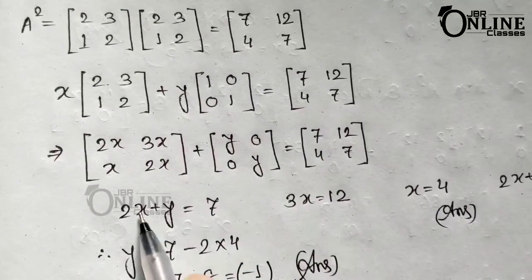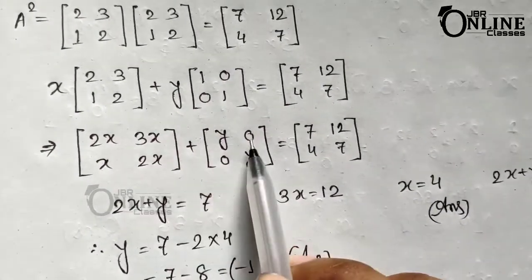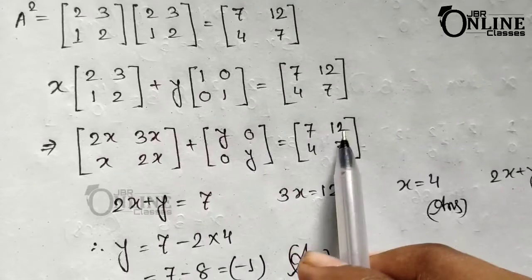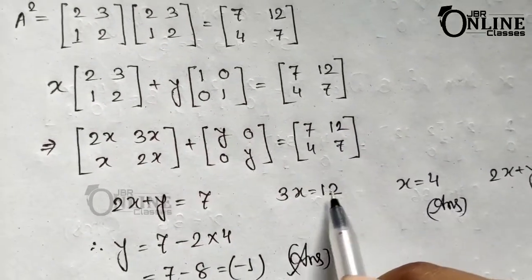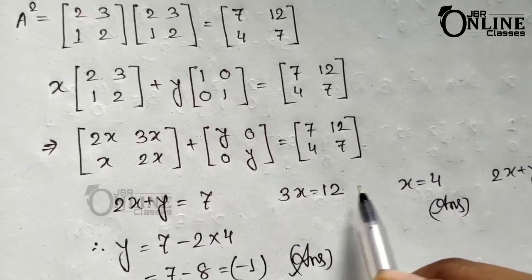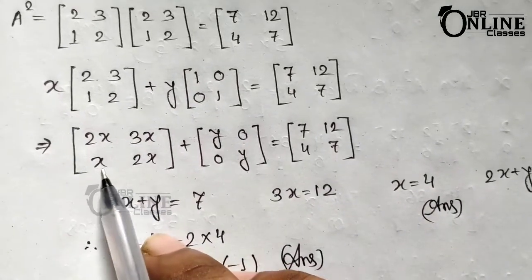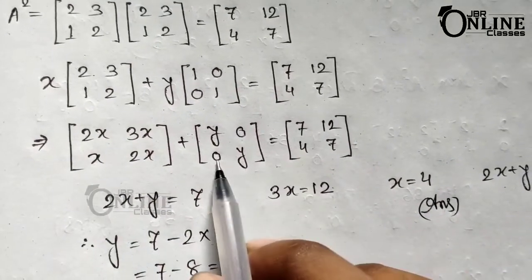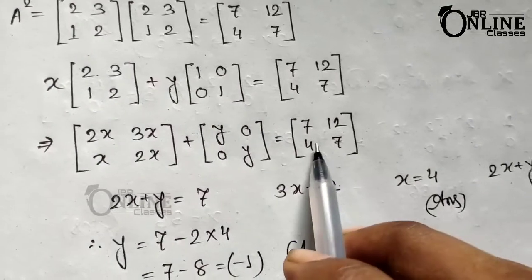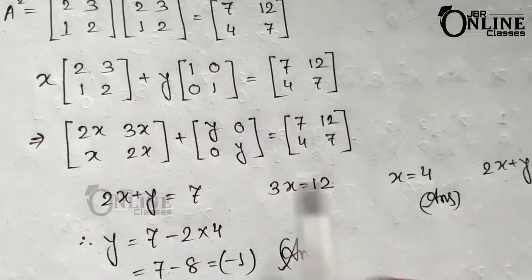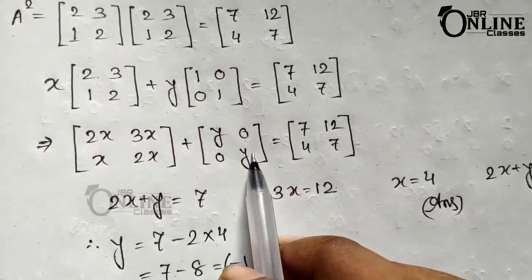Adding the two matrices: 2x plus y equals 7, so write down 2x + y = 7. Next, 3x plus 0 equals 12, so 3x = 12, giving x = 4. Also, x plus 0 equals x, and that equals 4, confirming x = 4.